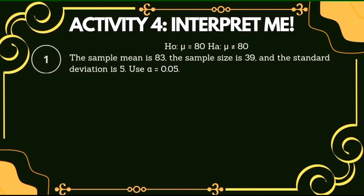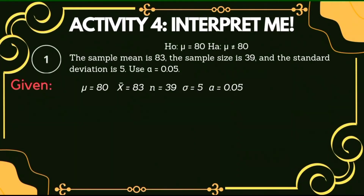The null and alternative hypothesis are both given in this situation. The null hypothesis is equal to 80, while the alternative hypothesis is not equal to 80. Let us list down the following given: the population mean is equal to 80, the sample mean is equal to 83, the sample size is 39, and the standard deviation is 5. We are going to use 0.05, or 5%, as the level of significance.